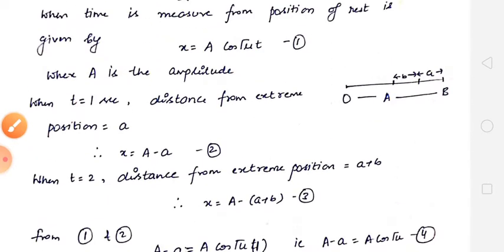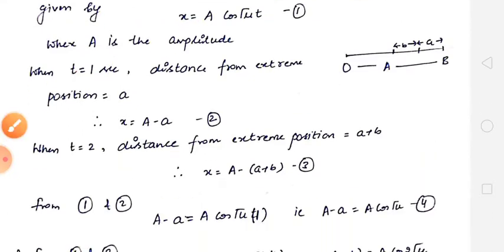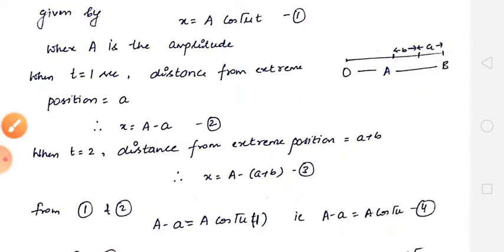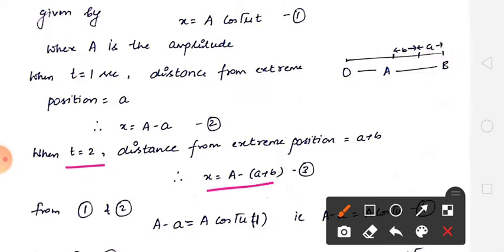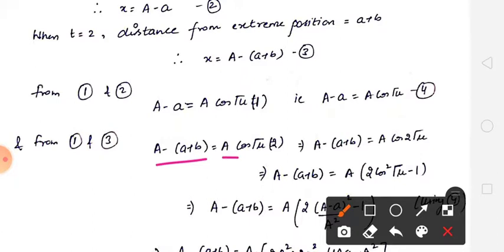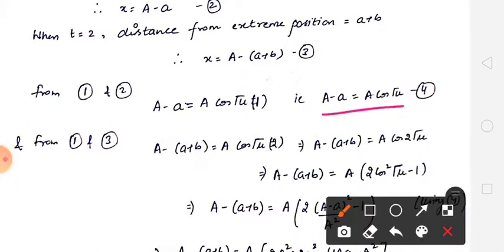अब x की value और t की value put कर देगे। When t = 1, x = (A - a): so (A - a) = A·cos(√μ · 1). When t = 2, x = (A - a - b): so (A - a - b) = A·cos(√μ · 2). एक equation हमारी यह आ गई, दूसरी equation यह आ गई। यह इसी को simplify करके लिखा है।